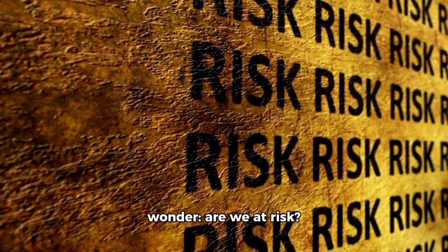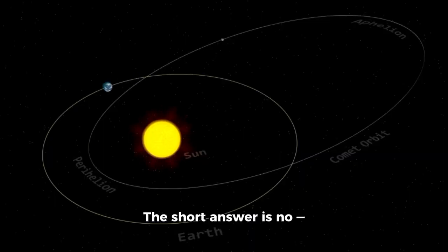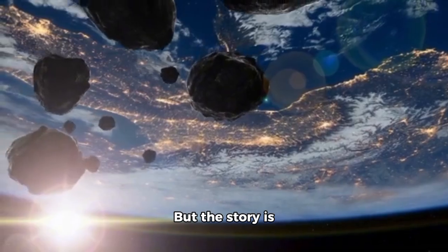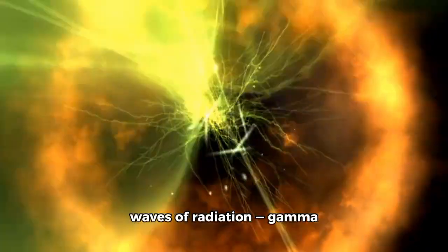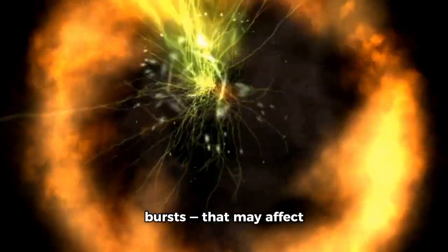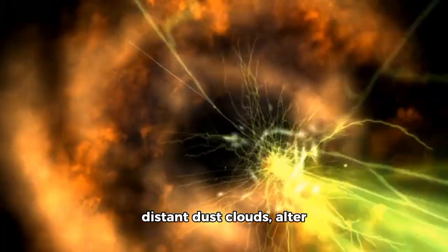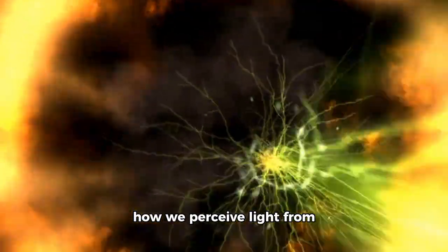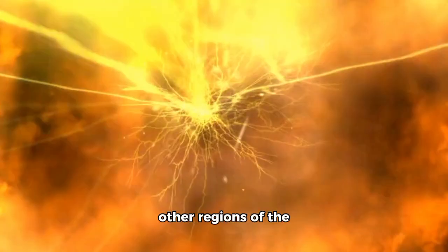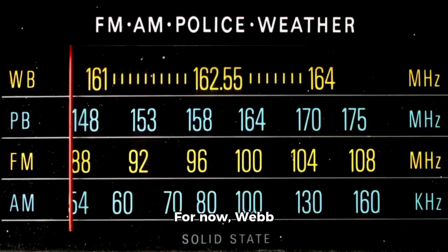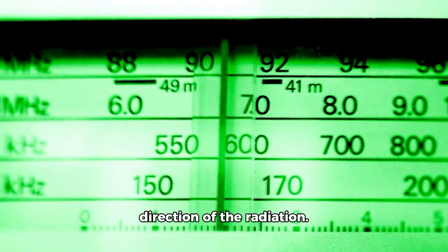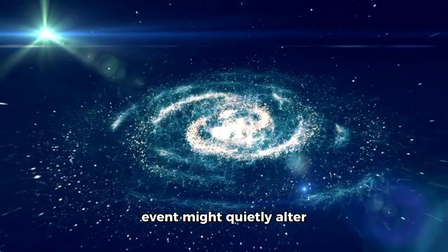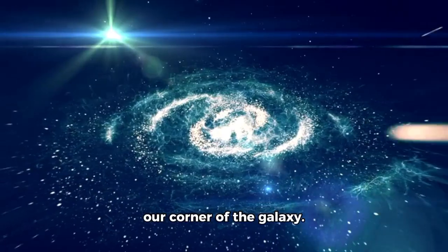Of course, many wonder, are we at risk? The short answer is no, Betelgeuse is far too distant to harm Earth. But the story is more nuanced. The blast will release waves of radiation, gamma rays, and electromagnetic bursts that may affect distant dust clouds, alter star formation, and change how we perceive light from other regions of the universe. For now, Webb continues to monitor the velocity and direction of the radiation. Though we are safe, the event might quietly alter our corner of the galaxy.